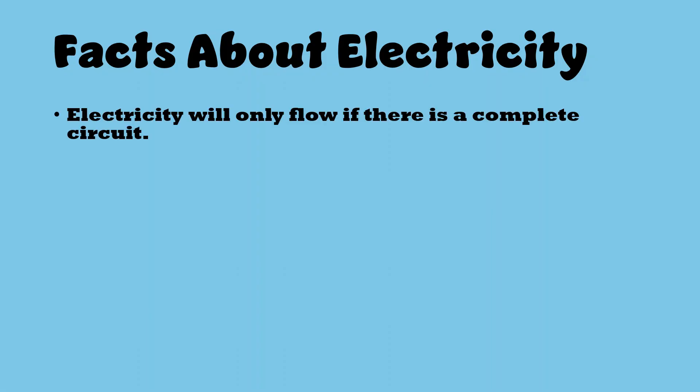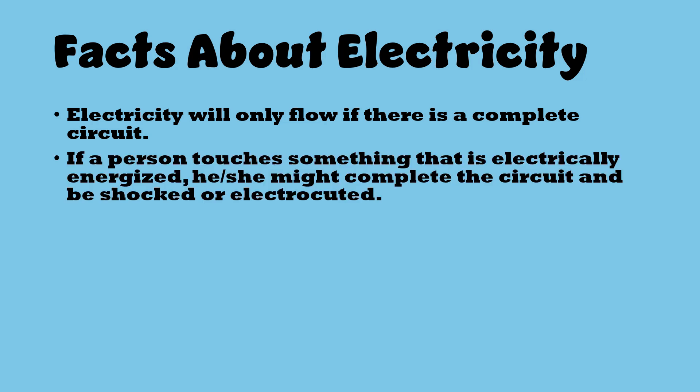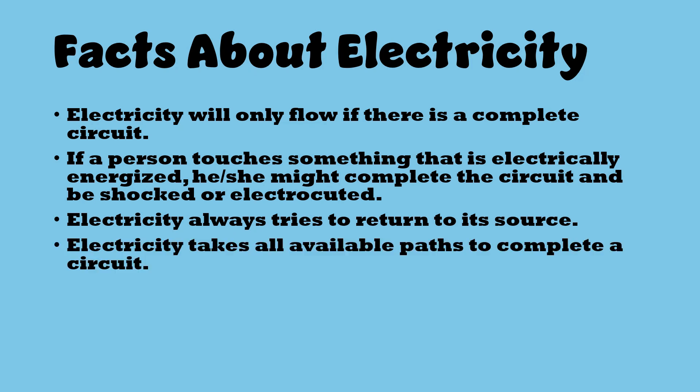First, electricity will only flow if there's a complete circuit or path for it to travel. Second, if a person touches something that's electrically energized, they could complete the circuit, which may result in a shock or even electrocution. Third, electricity always tries to return to its source. Fourth, electricity doesn't just take the easiest path. It takes all available paths to complete a circuit.